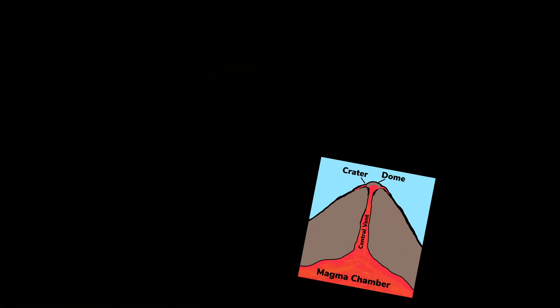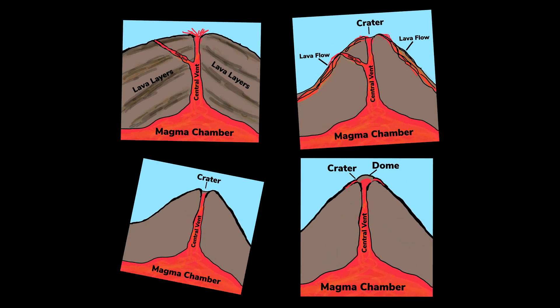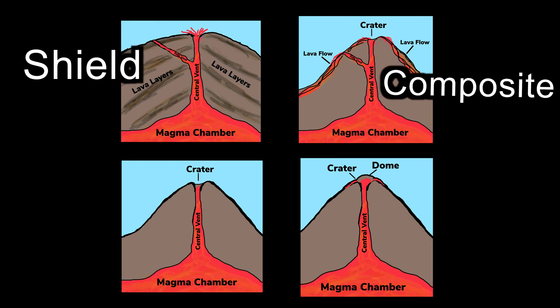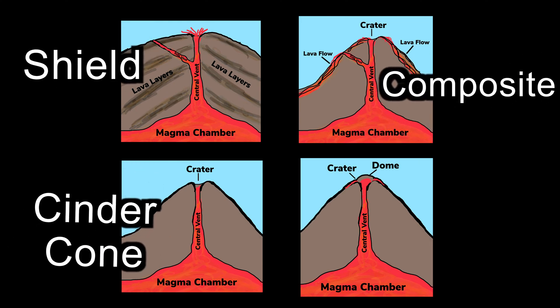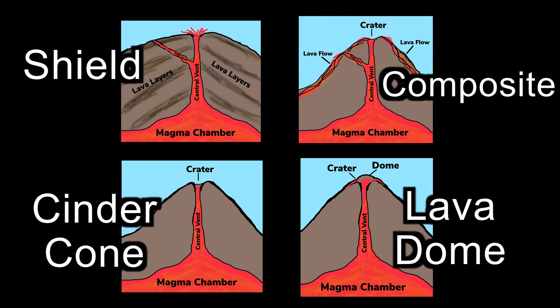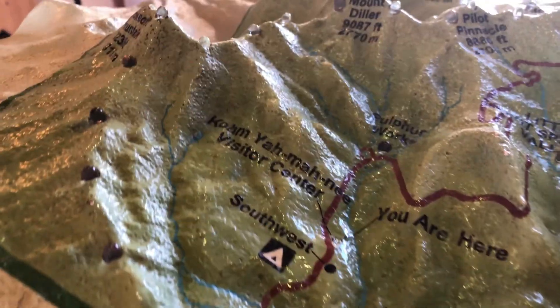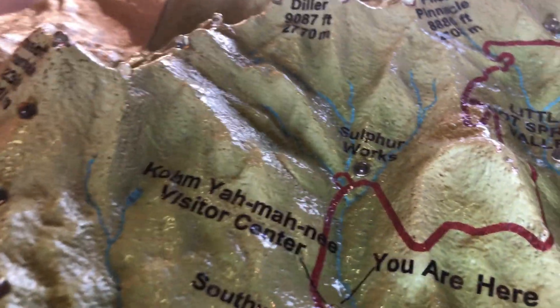There are four major types of volcanoes: shield, composite, cinder cone, and lava dome. Let's take a look at each of these types.